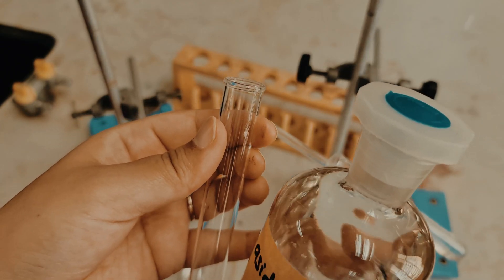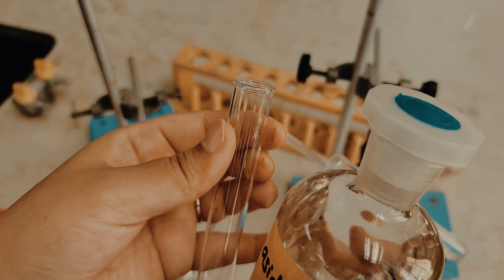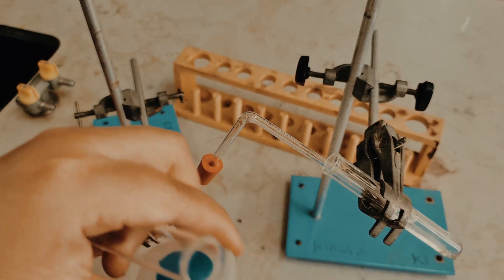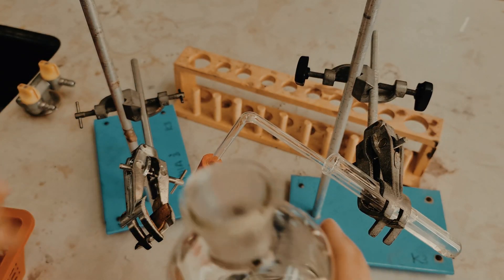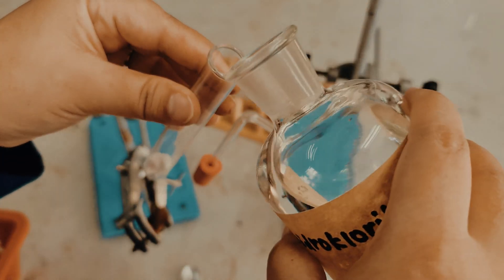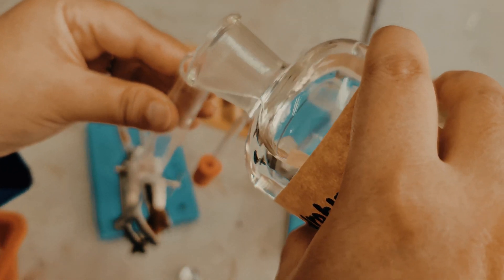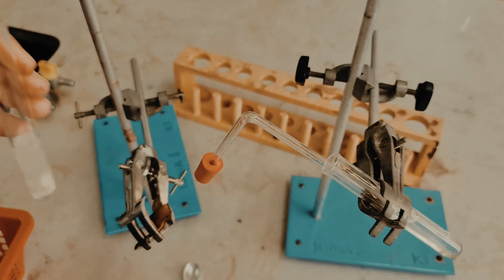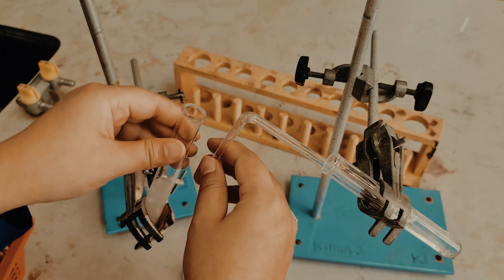And then I'm going to add some diluted hydrochloric acid to the marble chips in the test tube and seal it with the stopper.